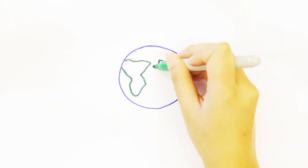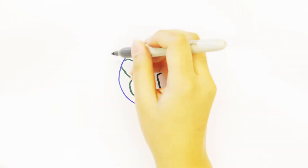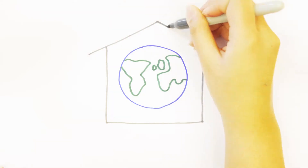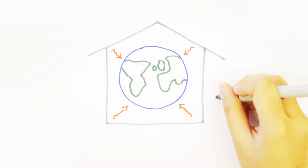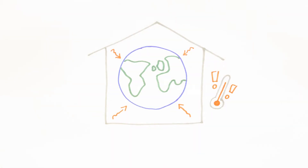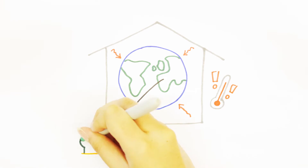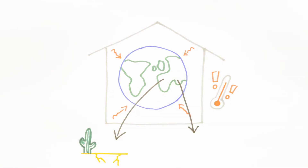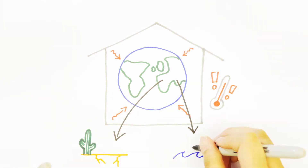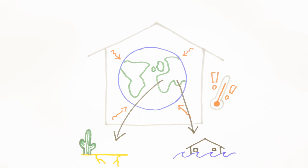Greenhouse gases cause global warming. They act as a blanket around the earth, trapping heat within the earth's atmosphere. This increases global temperature. Small changes in average temperature can change weather patterns, causing drought in some areas and flooding in others.